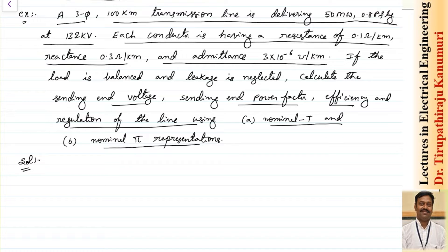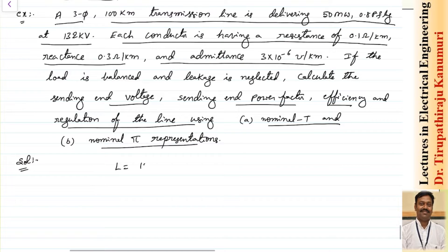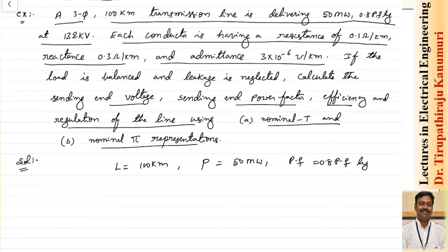Noting down the given values: three-phase system, length = 100 km, three-phase power = 50 MW, power factor at receiving end = 0.8 lagging. The receiving end voltage is given as 132 kV (three-phase), so dividing by √3 gives 76.21 kV per phase.